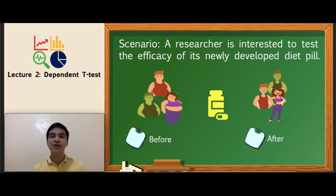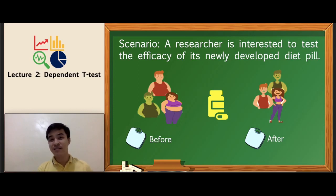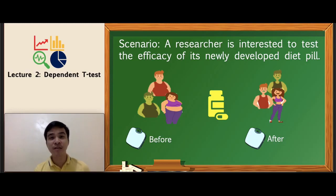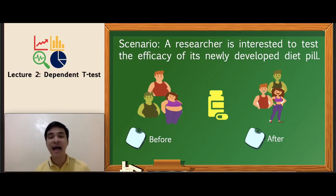Let us consider this scenario. Suppose a researcher is interested in determining the effectiveness or efficacy of a newly developed pill. The best approach is to randomly pick participants or subjects to take the pill. On the left side of the screen, you have the participants before. You introduce the pill over a span of time and then take their body mass after.